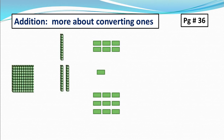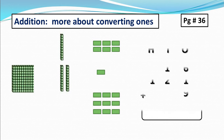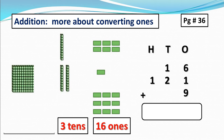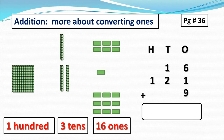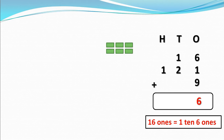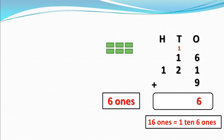Start with 1s. There are 16 ones: 3 tens and 1 hundred. Here we get 16 ones, but we cannot write 16 in the 1s column. 16 ones equals 1 ten and 6 ones. So here we convert 16 ones into 1 ten and 6 ones.